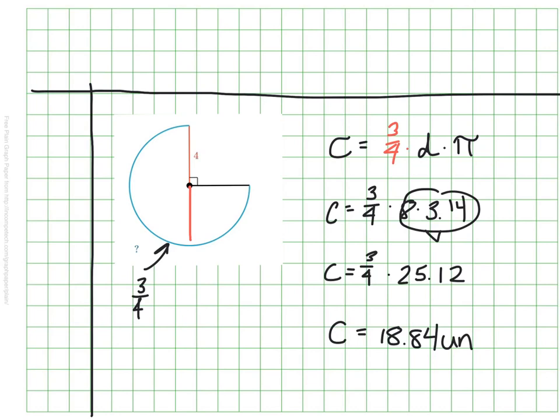So the essential question of the video was how do we calculate partial area and arc length of a circle? And we've seen a bunch of different examples. I'm not leaving you with a question to solve. We'll do some more practice in class, so bring your notes and any questions you might have.